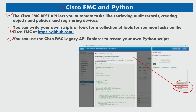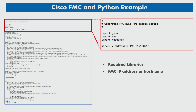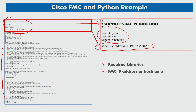This script can be used to make the REST call and integrate it into your app, and it is primarily intended as a learning and bootstrapping tool. Here is the full Python script that uses the Cisco FMC REST APIs. Zooming in, this part shows the required libraries and the FMC IP address or hostname — that's the first part of the code.